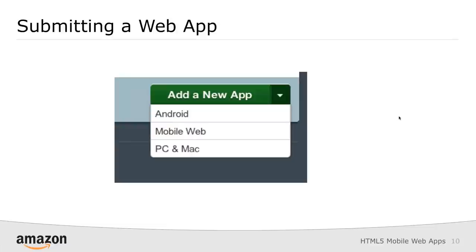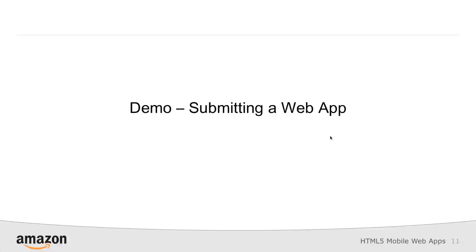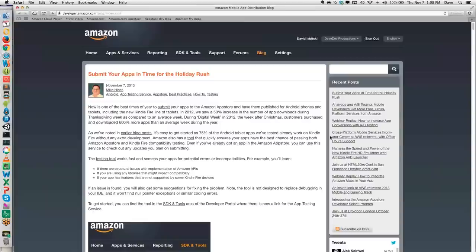Let's go ahead and look at submitting a new web app. You can go over to developer.amazon.com/app-store. On that screen, you'll have the ability to add a new app. When you hit the dropdown, you have Android, mobile web, and PC and Mac. We're going to click mobile web and be taken to the new web app submission screen.